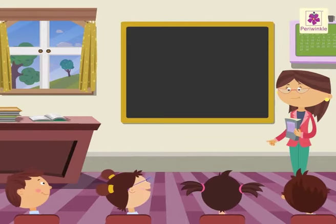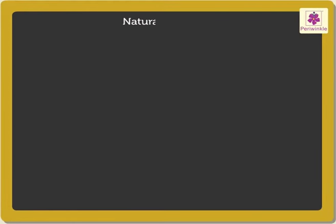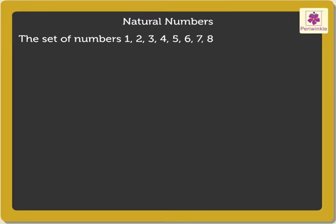Before we begin, let us understand what do we mean by natural numbers. The set of numbers 1, 2, 3, 4, 5, 6, 7, 8 and so on are called natural numbers.